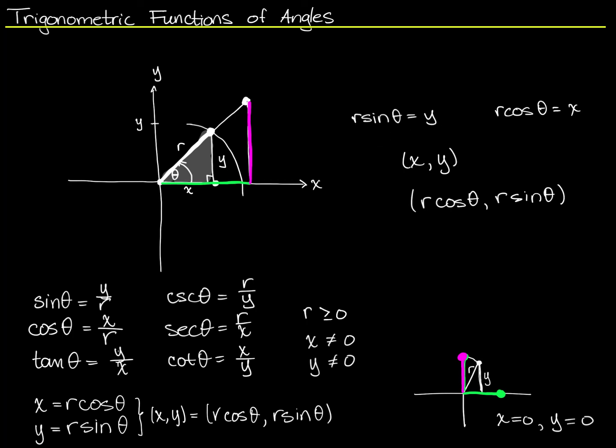Y equals R sine θ is down here. X equals R cosine θ is here. And the fact that I can write X comma Y, a point on the plane, as R cosine θ comma R sine θ, that's down here as well. So now I can erase this part. I want to do that because I want more room on the screen to talk about one of the ways in which we can use this sort of new way of looking at sine and cosine.